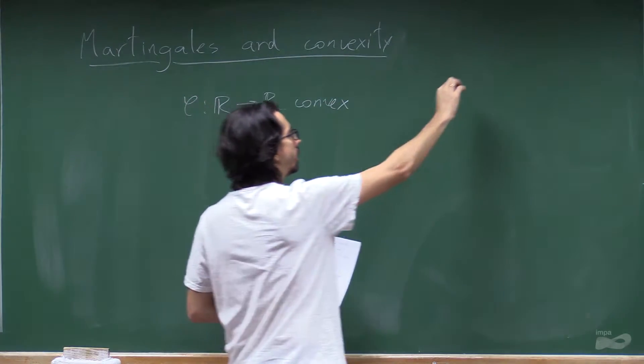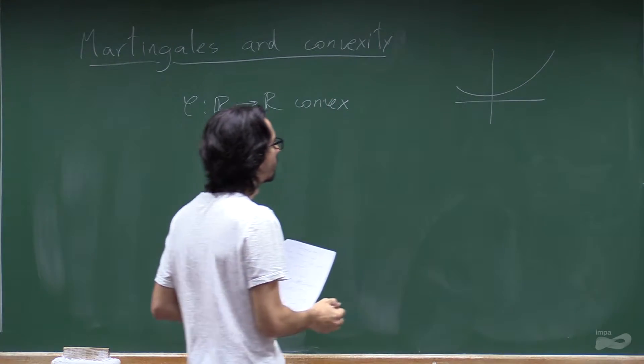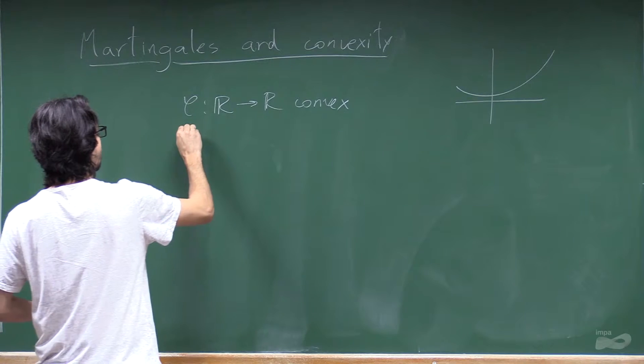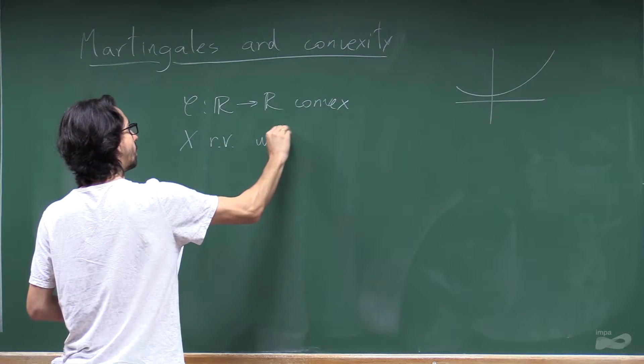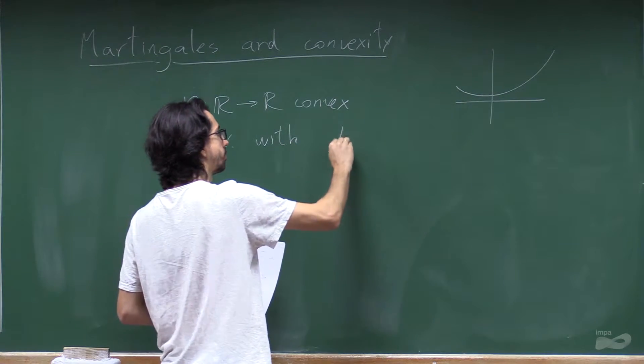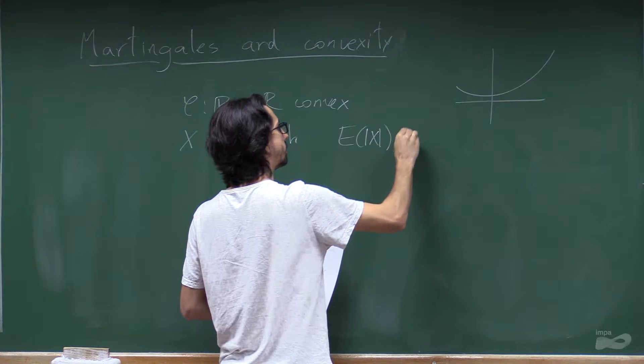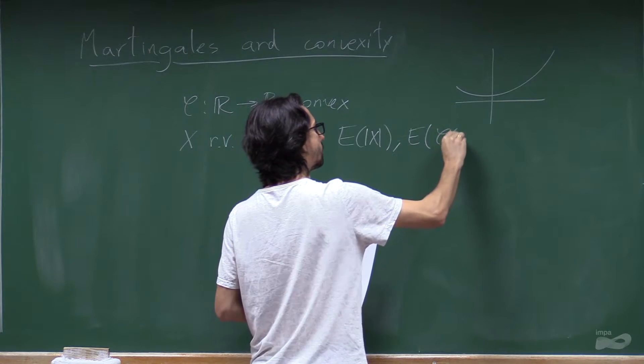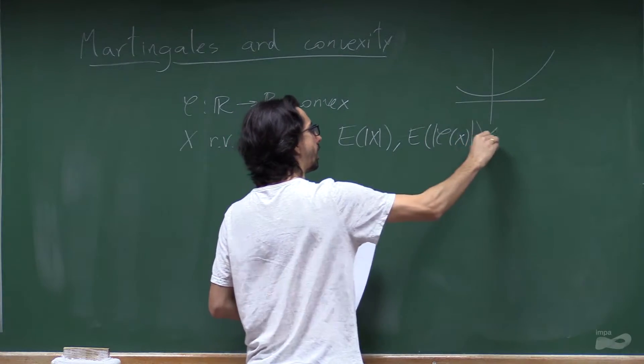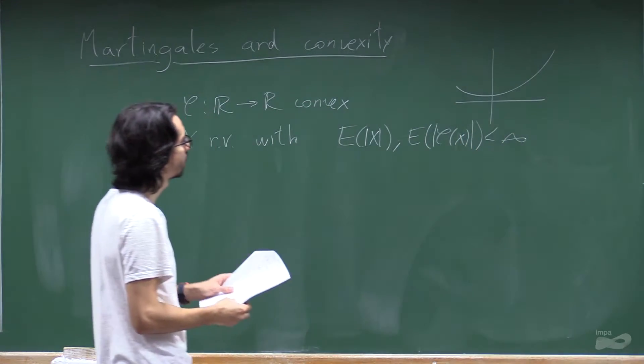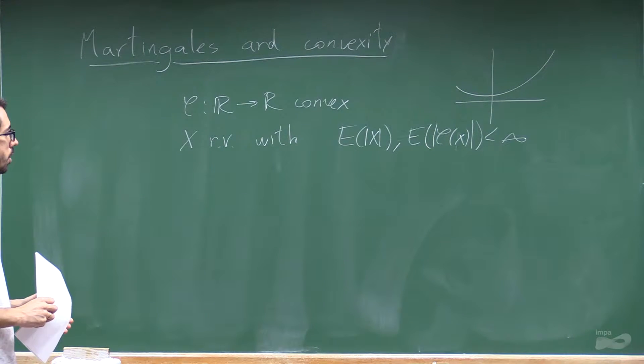So a good picture would be this one. And imagine you have x, a random variable, with the expectation of both x and phi of x finite. So we are in a context that everything we talk about is in L1.